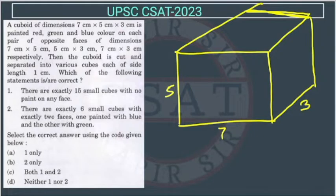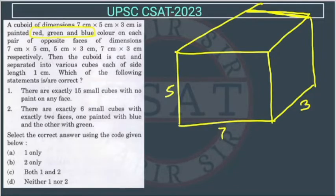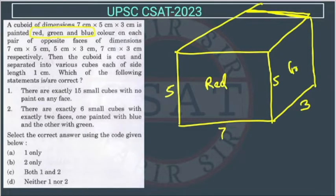So now what they are saying is that the 7×5 face is painted red, green, blue. So this 7×5 face is painted red. The 5×3 face is painted green, and the remaining pair is painted blue.